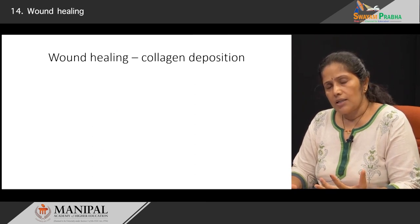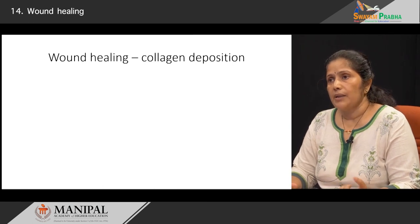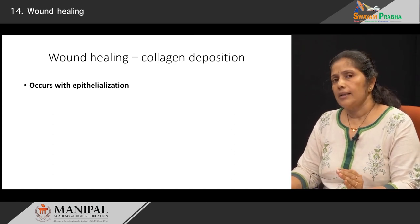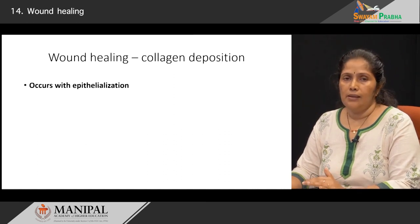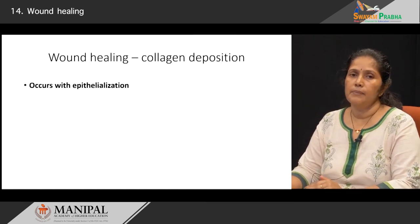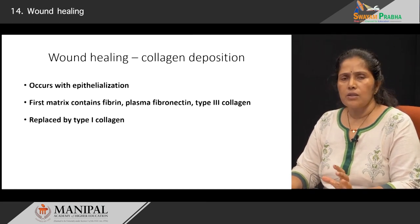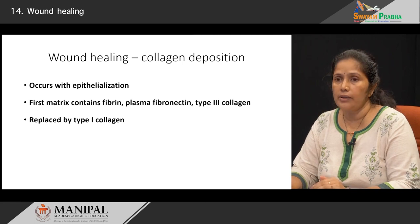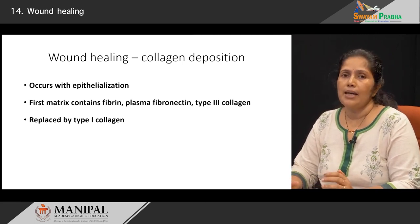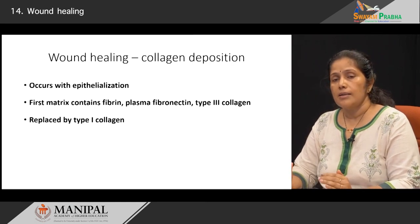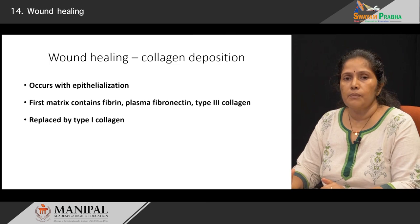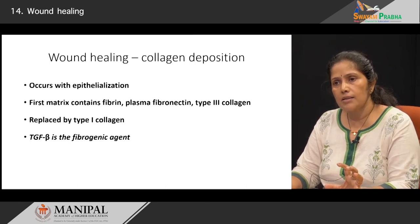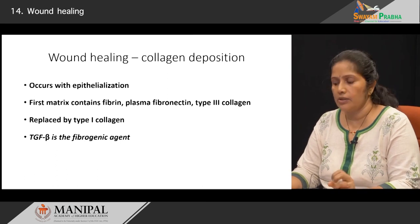An important aspect is the deposition of collagen by fibroblasts, which occurs simultaneously with the laying down of the overlying epithelial layer. As the epidermal cells are forming, collagen is being laid down in the dermis. At first the matrix has type 3 collagen, still a lot of fibrin and plasma fibronectin, and slowly over time this gets replaced by type 1 collagen. A very important player in stimulating fibroblasts is transforming growth factor beta.